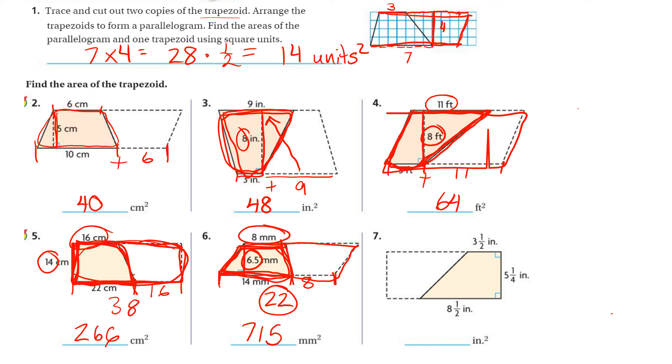Number 7. Same thing. They've given us our height, 5 and 1 fourth. The length from here to here is given to us 8 and a half. So the length from here to here is just this other base, 3 and a half. So we add those together. 1 half plus 1 half is 1 whole, so that's like 9 plus 3. I'll show you the work up here.